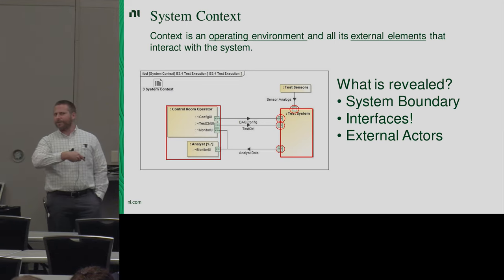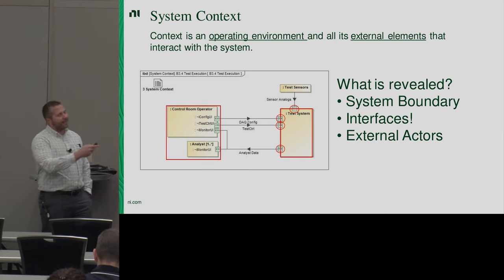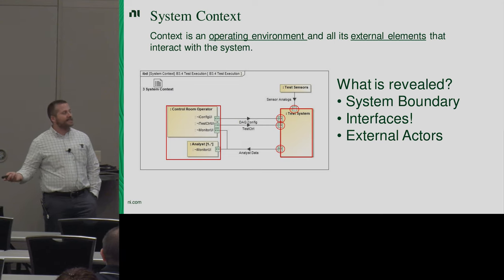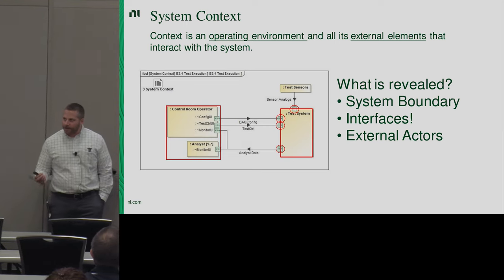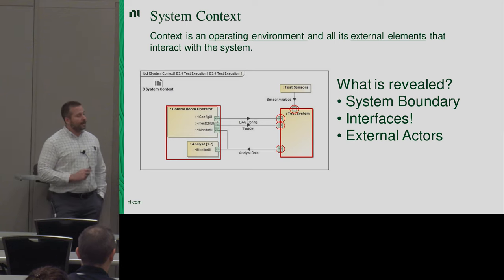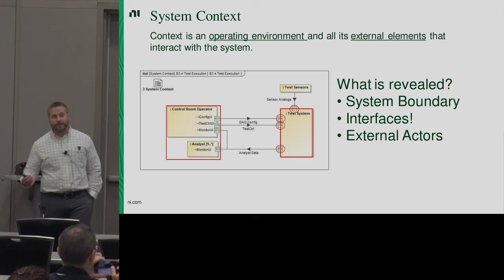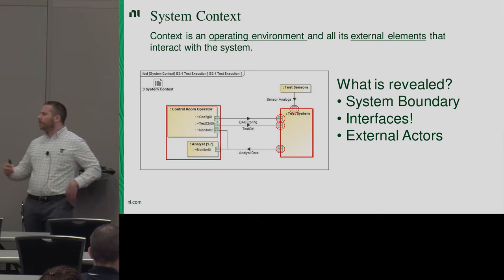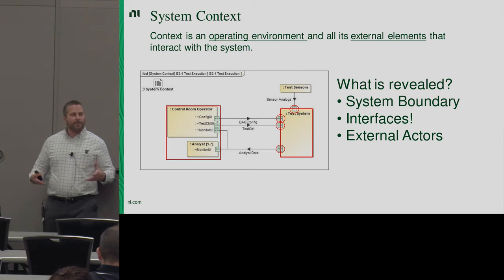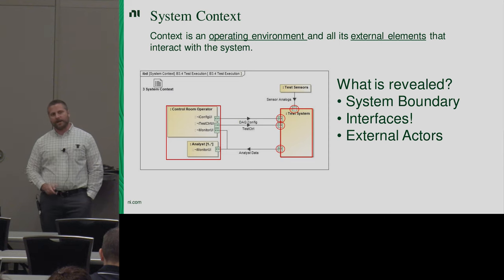Making context diagrams also helps you identify all the interfaces to your system early on, and all external actors — either machine or human — that are trying to extract value from your system. These are pretty important questions to think through: what's in your system, who's going to be interacting with it, and what do they want to accomplish? Your calibrator — is that part of your system or a dependency? Those kinds of conversations were pretty rich for us.